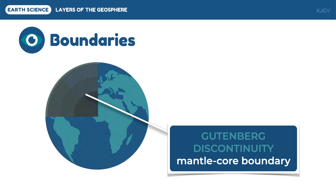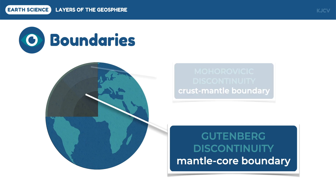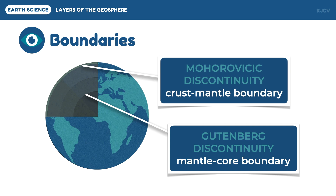As the waves exit this boundary, the seismic waves will seem to appear again in the mantle and will change velocity once they reach the Mohorovičić Discontinuity. This is because the rock density in the crust is different from that of the mantle. This discontinuity is named after Andrija Mohorovičić.